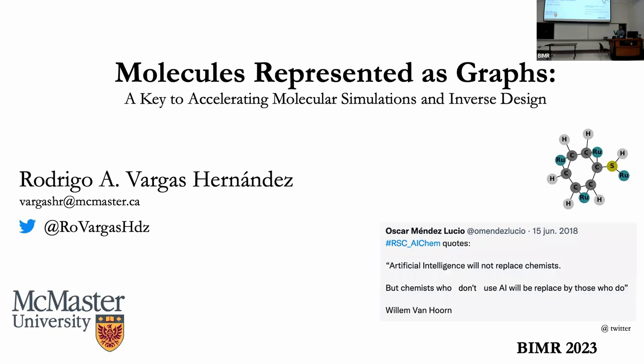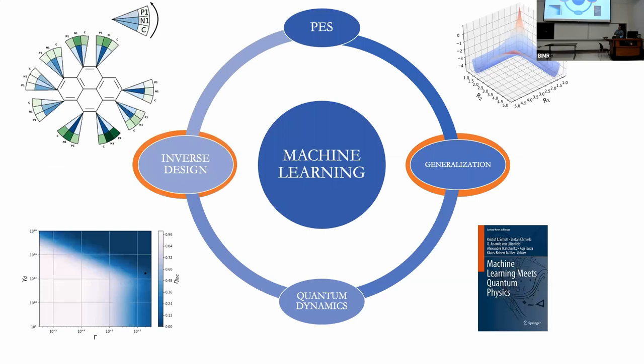As Alex pointed out, my research has been characterized into four main areas: potential energy surfaces, generalization, quantum dynamics, and inverse design. Because of time constraints, I'll talk to you about generalization and inverse design through machine learning.